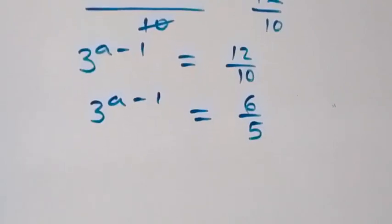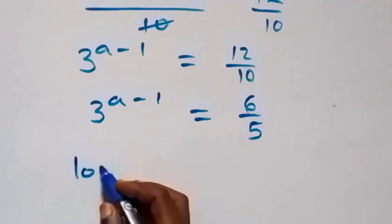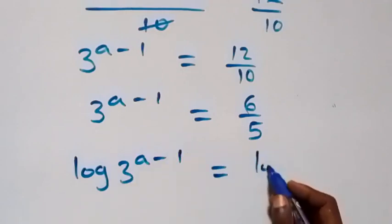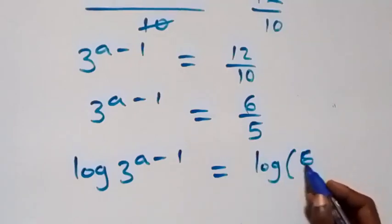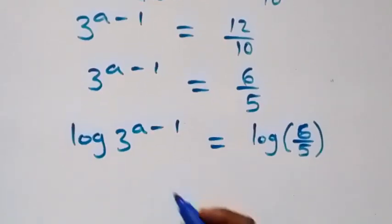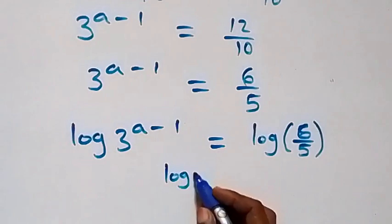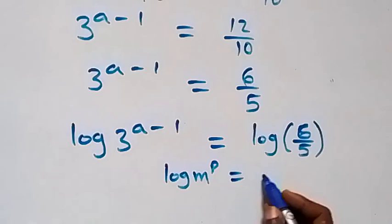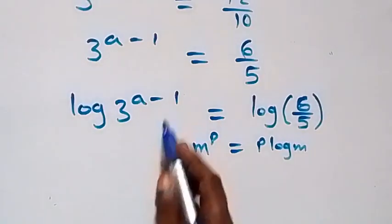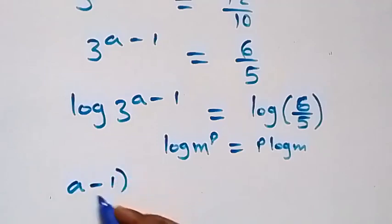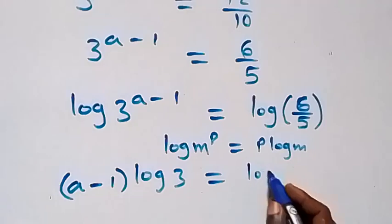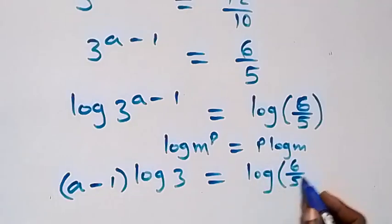The next step from here, let's take the log on both sides. Then, we have log of 3 raised to power a minus 1, now equals log of 6 over 5. From the power law of logarithms, when we have log m raised to power p, this can be written as p log m. Here, a minus 1 is the power, so this becomes a minus 1 multiplied by log 3, equals log 6 over 5.